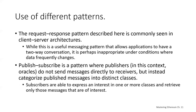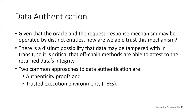If we assume the source of data queried by a decentralized app is authoritative and trustworthy, an outstanding question remains: given that the oracle and the request-response mechanism may be operated by distinct entities, how can we trust this mechanism? There's a distinct possibility that data could be tampered with. Even if the blockchain is somewhat resistant to being hacked, what if your off-chain data source has been hacked? It's critical that off-chain methods are able to attest to the data's integrity. Two common approaches are authenticity proofs and trusted execution environments.